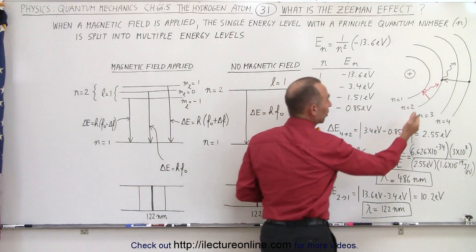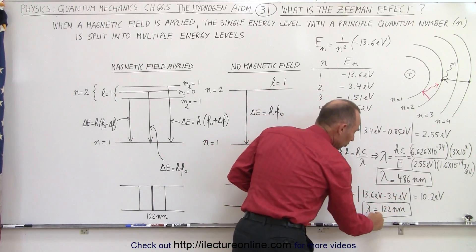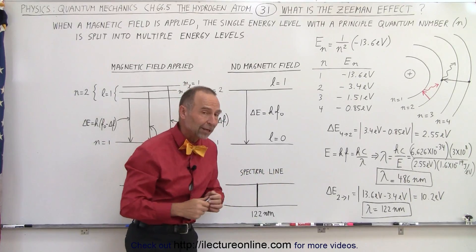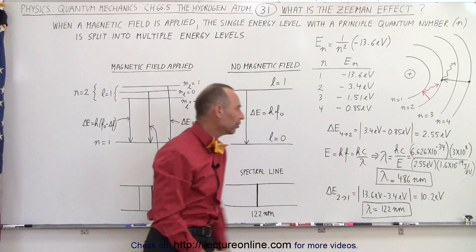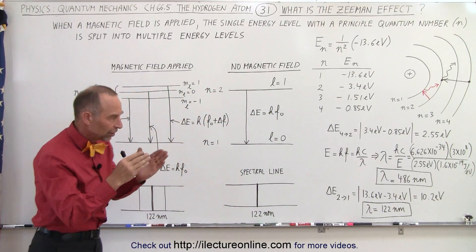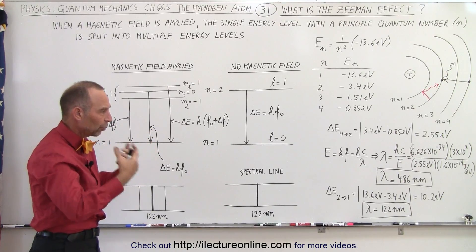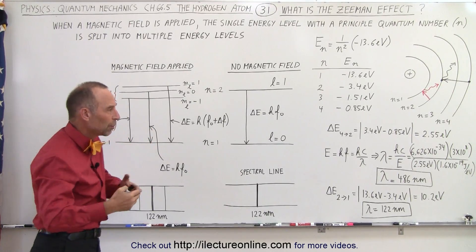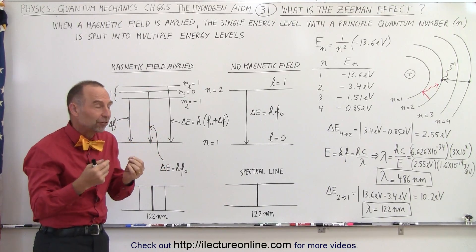Likewise, when an electron jumps from the second level down to the first level, we can calculate the associated wavelength of that photon, 122 nanometers, which is an ultraviolet photon, whereas the previous was a visible light photon. These spectra of those jumps were already discovered, but then something very strange happened. When we subjected hydrogen atoms to a magnetic field, we saw something different.